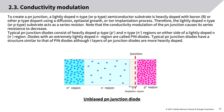To create a PN junction, a lightly doped N-type or P-type semiconductor substrate is heavily doped with boron (B) or other P-type dopants using a diffusion, epitaxial growth, or ion implantation process. Therefore, the lightly doped N-type or P-type substrate acts as a series resistor.